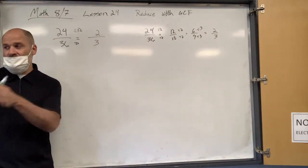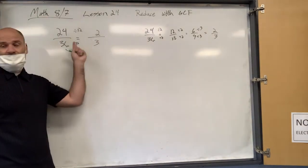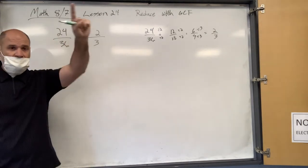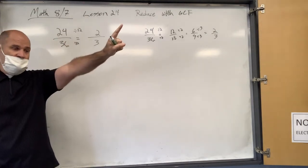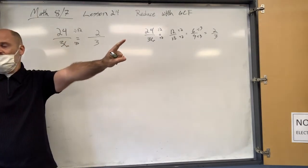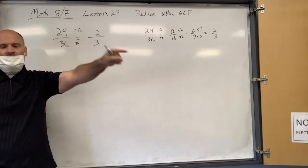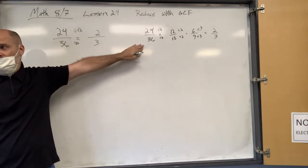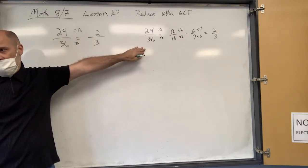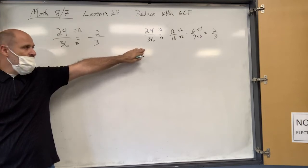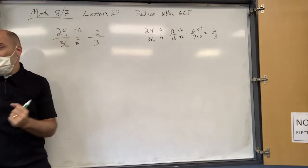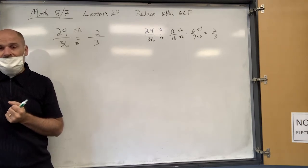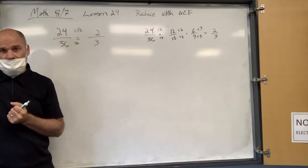The trick is: if you can find the biggest number that goes into both, that's only one step and you're done. It's harder to find that bigger number sometimes, but it's only one step. Sometimes it's easier to just keep chipping away at it — there's nothing wrong with that. But it does help to know the greatest common factor.